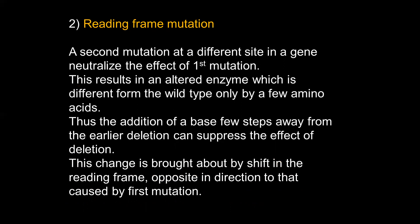The second type of intragenic suppression is reading frame mutation suppression. A second mutation at a different site in the same gene neutralizes the effect of the first mutation, resulting in an altered enzyme which is different from the wild type by only a few amino acids. In frameshift mutation, because of addition or deletion of a base, the message goes out of frame from the point of deletion or addition. The second mutation takes place in the same gene but at a different site, resulting in an altered enzyme slightly different from wild type by only a few amino acids.